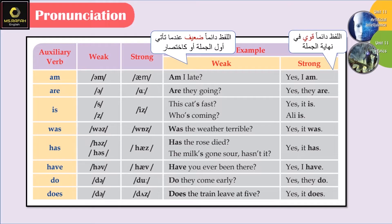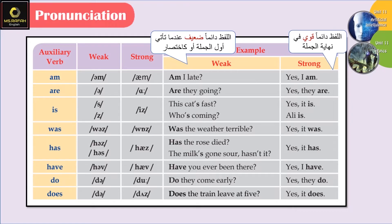'Is' can be pronounced either /s/ or /z/ in its weak form. In strong form it is 'is'. For example: 'This cat's fast', 'Who's coming?' — notice we contracted 'is' to a single weak sound. In a short answer, it becomes strong: 'Yes, it is.' / 'Ali is.'